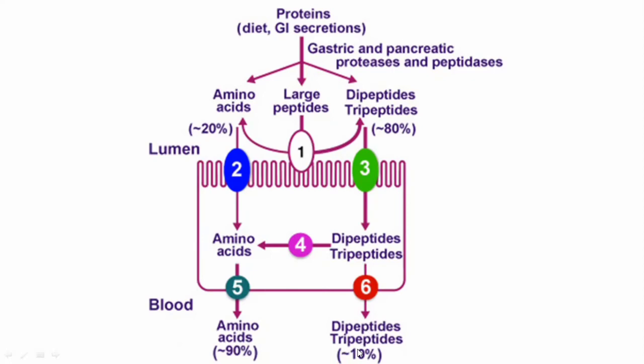In contrast, in the case of carbohydrates, no disaccharides or trisaccharides were absorbed — only monosaccharides entered the blood circulation. But in the case of proteins, approximately 90% of absorption takes place in the form of amino acids, while dipeptide and tripeptide absorption also takes place.